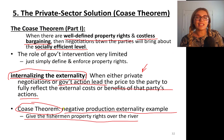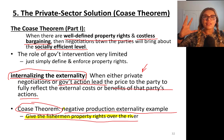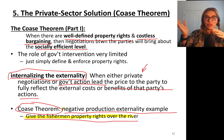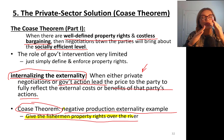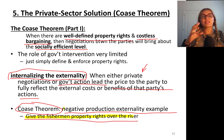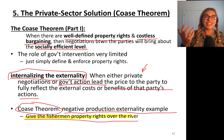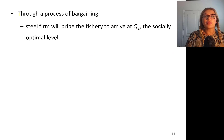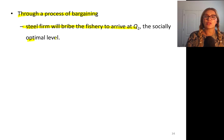Another option could be giving property rights to the steel factory. The government says that this factory has every right to pollute this river. Then fishermen have to pay the steel factory to reduce the production of steel by a certain amount. For each unit of steel, the fisherman has to pay the steel factory a hundred dollars for the right to fish in the river. Through a process of bargaining, the steel firm will bribe the fishery to arrive at Q2, the socially optimal level.